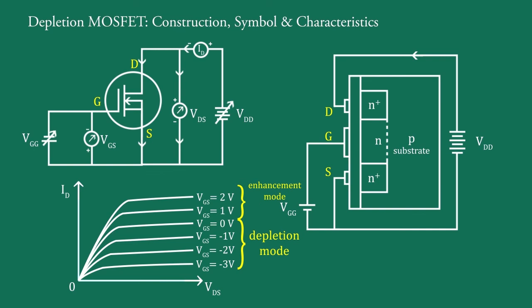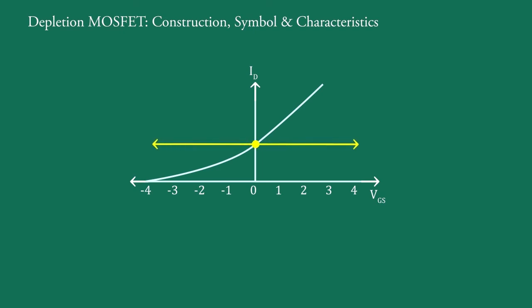If we draw transfer characteristics, that is Id versus Vgs at a constant drain to source voltage Vds, its nature forms like this. It may be seen that drain current Id flows even when gate bias voltage Vgs equal to zero. To this point, the MOSFET operation is divided into two parts: this is depletion mode and this is enhancement mode of the MOSFET.